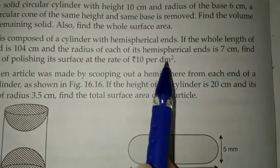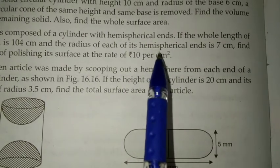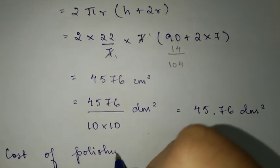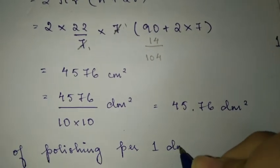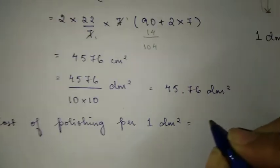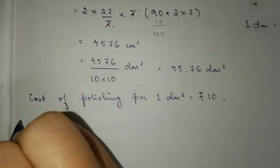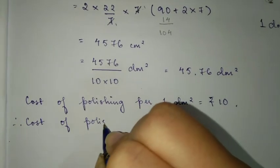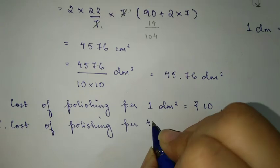Now if you take a look at the question, it says find the cost of polishing its surface at the rate of rupees 10 per decimeter square. So we're going to write that down. Cost of polishing per one decimeter square is rupees 10. This is what is given to us in the question. Therefore, cost of polishing 45.76 decimeter square is rupees 10 times 45.76.